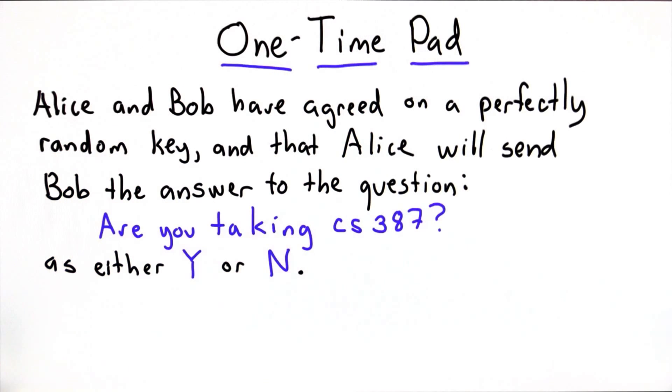The next question checks that you understand one-time pads. So Alice and Bob have agreed on a perfectly random key, and that Alice will send Bob the answer to the question: Are you taking CS387 as either the single character Y or the single character N.